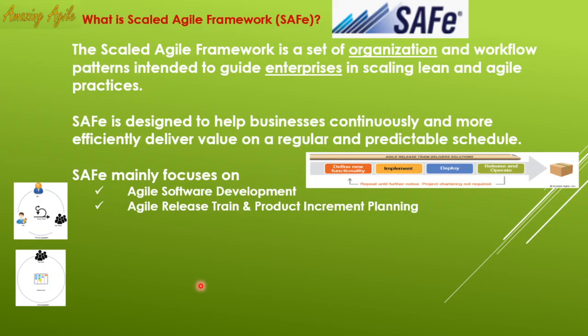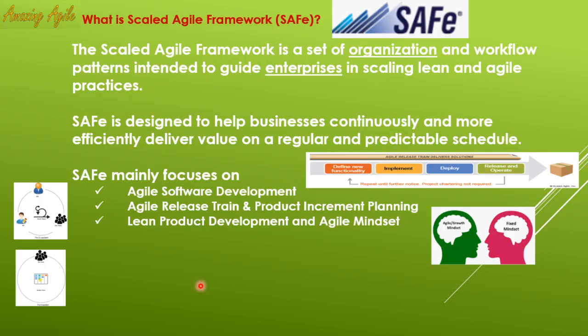Lean product development means picking out the most valuable items to deliver while eliminating those that are not value-added — filtering to the most valued product for the client in the shortest amount of time. Agile mindset means every corner of the organization, not just the development team but everyone including top management and supporting groups, must have an agile mindset and think about client delivery. Customer centricity — as per the agile manifesto, the customer must be at the center of all activities, and all activities must be transparent to the customer.